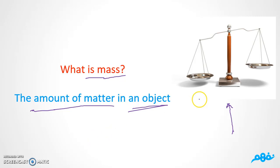That's why we use this tool here, which is the balance. We use the balance because we would like to measure the mass of objects. For example, I'm going to put one, two, three apples here. You're going to say the amount of matter is three apples, and the mass could be maybe 500 grams, 300 grams, etc.